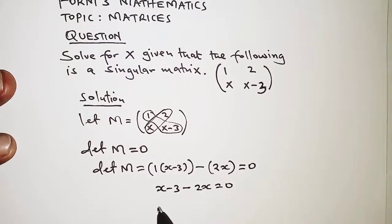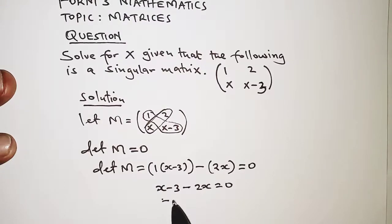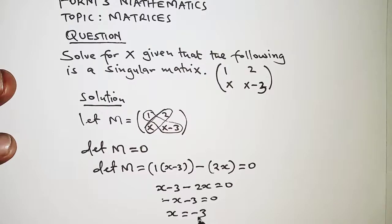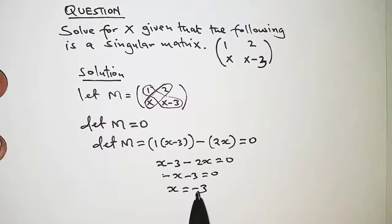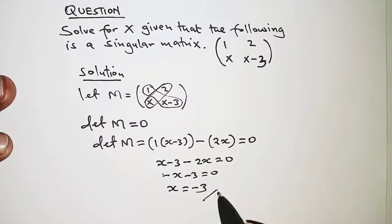And then from here we have to collect the like terms so that we have X minus 2X, that is minus X, and then minus 3 that is 0. So from this, X is negative 3.